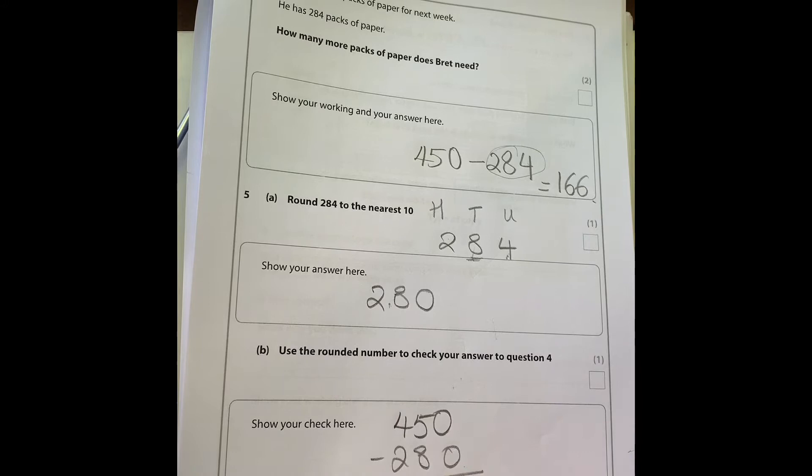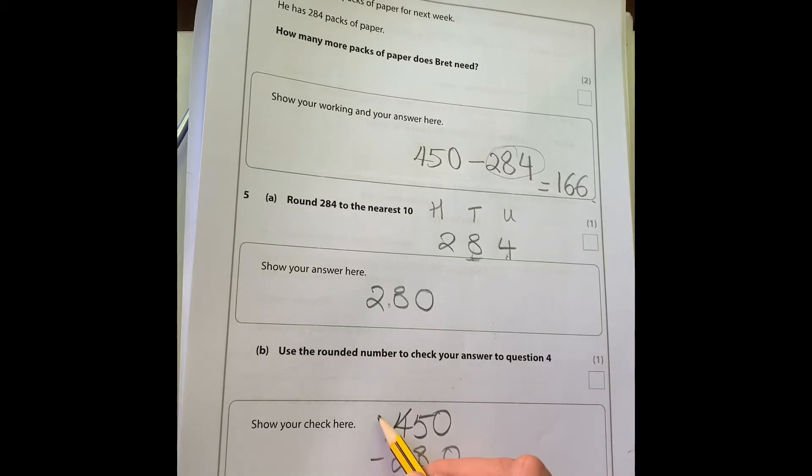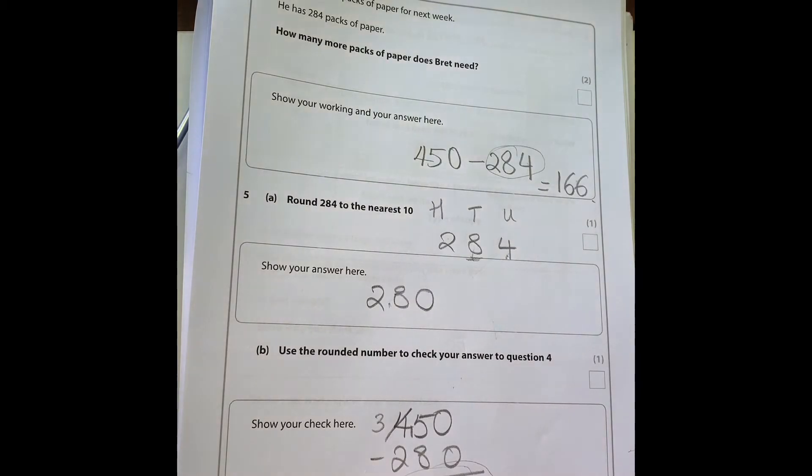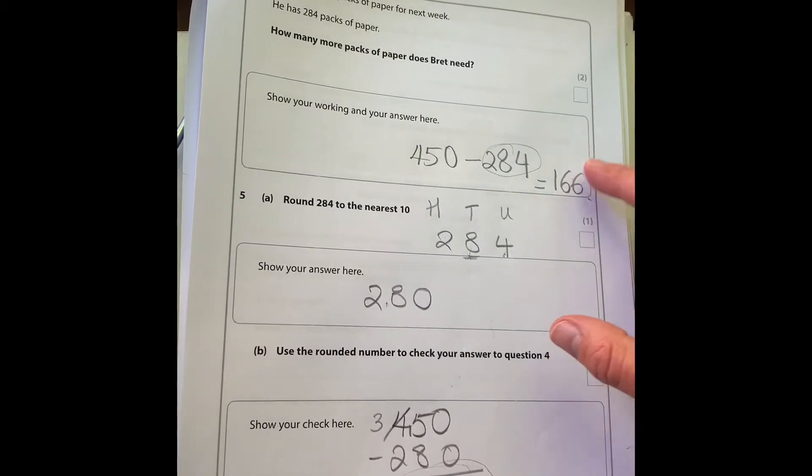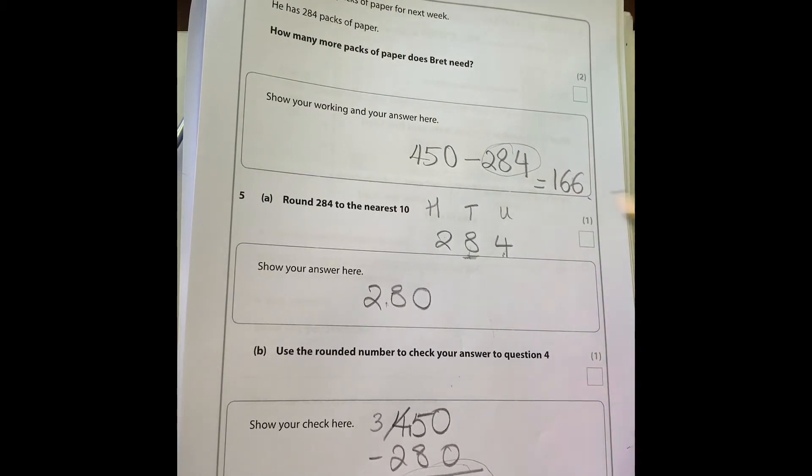Fifteen take away eight is seven, and three take away two is one, so we've got 170, which is close to 166. It's just using a rounded number to make an estimate and check that this answer is roughly in the same ballpark. If it asks you to do this, substitute your original for the rounded one.